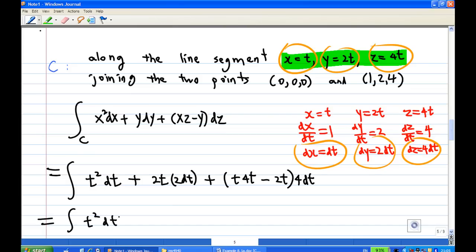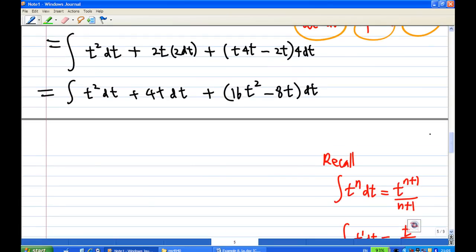Let's see what is this. t squared dt plus 4t dt plus, let's multiply, 16t squared times 4 and minus 8t dt. So you collect all these together. You get how many t squared? 16t squared and t squared. So you get 17t squared. 4t and minus 8t all together, you get minus 4t dt.